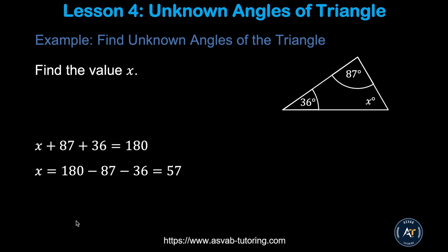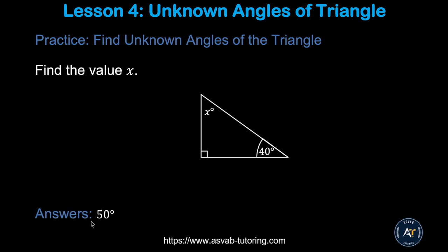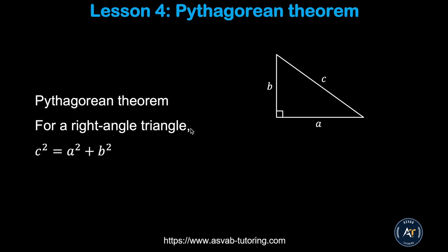Now we'll learn how to find the missing angle of a triangle. The angles of a triangle sum to 180 degrees. If one angle is 36 and another is 87, add those two and subtract from 180 — so x equals 57 degrees. Pause the video and try the next practice problem; note that a right angle symbol means 90 degrees, and you should get 50.